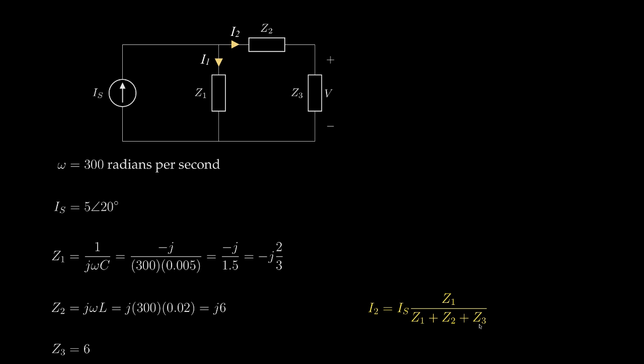Once we know this current, we can solve for the voltage V as the current I2 times the impedance Z3. This final equation gives us all of the equations we'll need to solve for the desired voltage V.